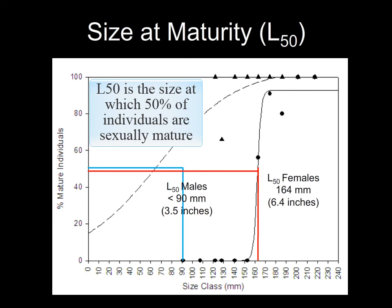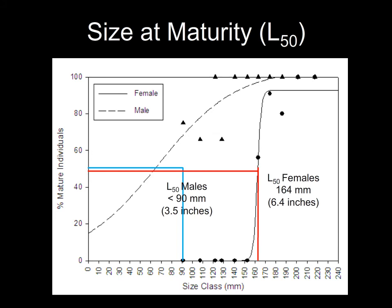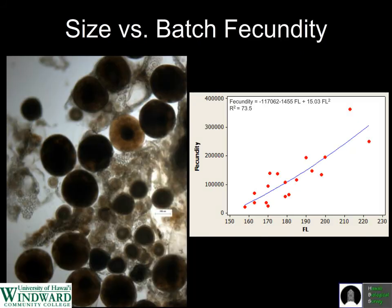Once we process gonads for many individuals in the population, we try to plot the L50, or size of maturity — the size at which 50% of individuals of a given sex are sexually mature. It tends to differ between males and females. Males of this particular species tend to mature around 90 millimeters total length, whereas females tend to mature around 164 millimeters. This is quite common in coral reef fishes — typically males will mature sooner, whereas females will mature later and their growth may slow because of the energetic investment females put into reproduction.